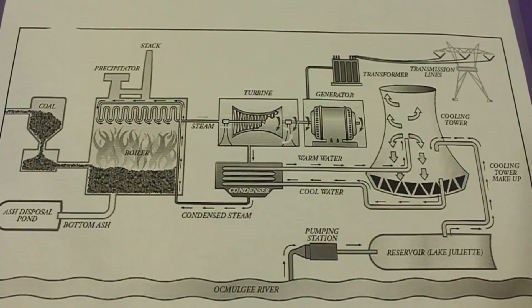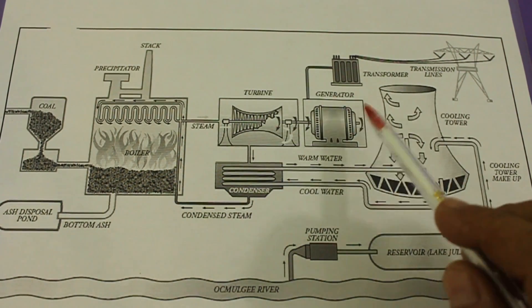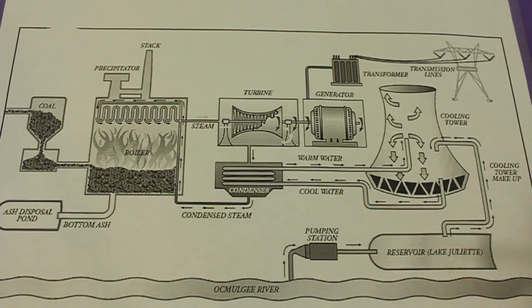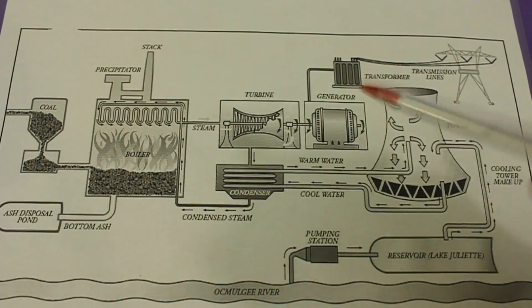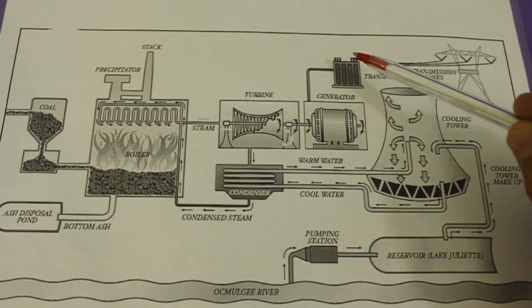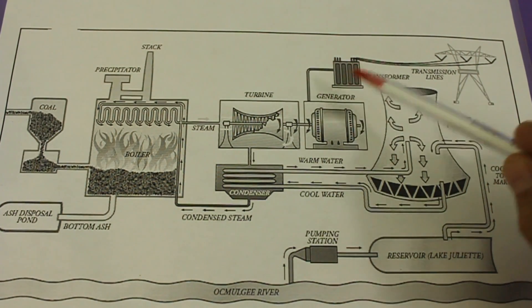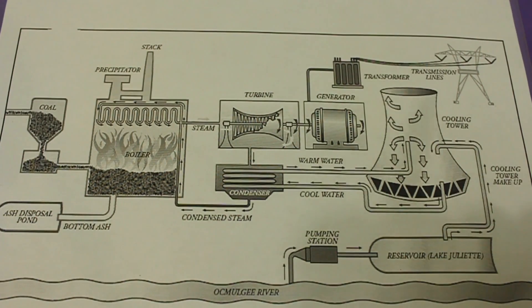Any power station has three main components. One is the generator that normally produces AC current so it is an alternator. Next we have the transformer that raises the voltage to several thousand volts to send to the transmission lines.